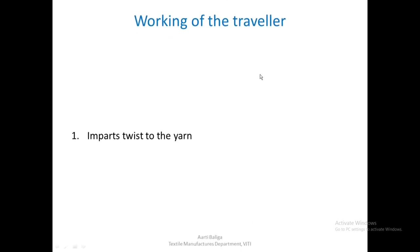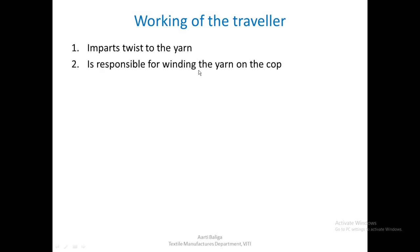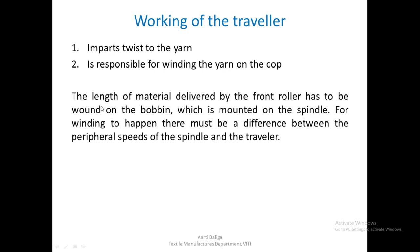The traveler imparts twist to the yarn and is also responsible for winding the yarn on the cop — these are its two functions. One rotation of the traveler on the ring inserts one twist into the yarn. For winding, the length of material delivered by the front roller has to be wound on the bobbin mounted on the spindle. For winding to happen, there must be a difference between the peripheral speeds of the spindle and the traveler.